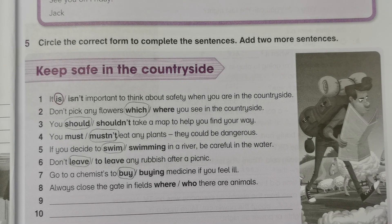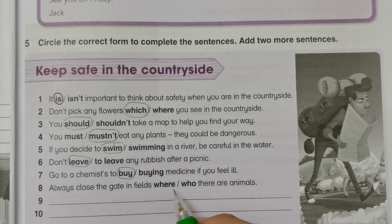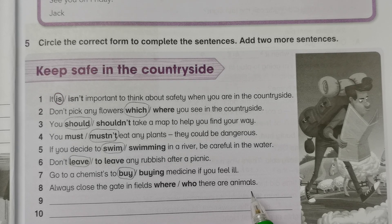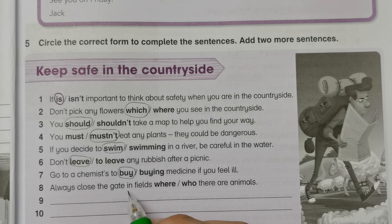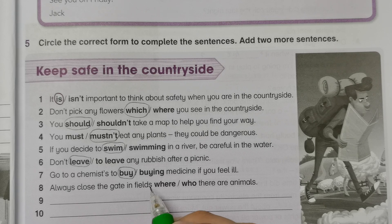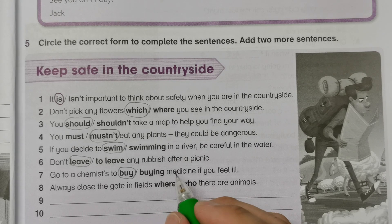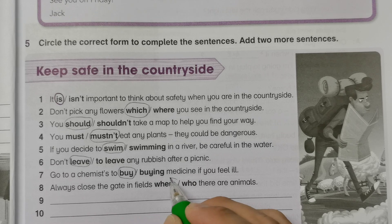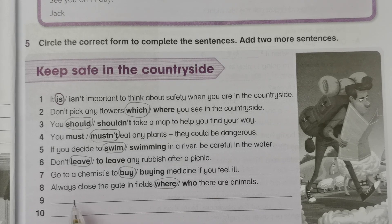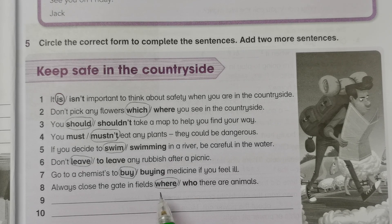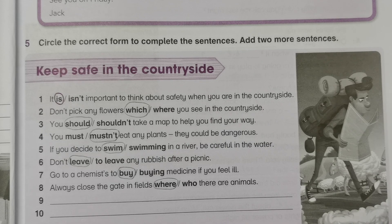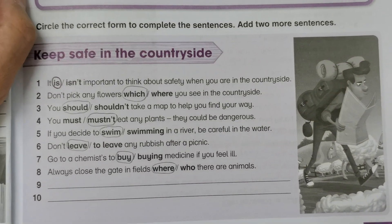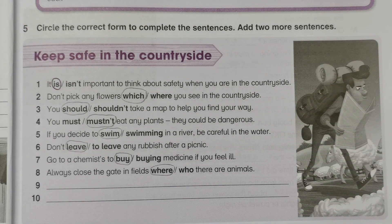Number eight: 'Always close the gates in fields — where or who — there are animals.' You may refer to the subject here. So this subject is a location, so we use 'where' instead of 'who'. So always close the gate in fields where there are animals. And then number nine — you can write something about safety.